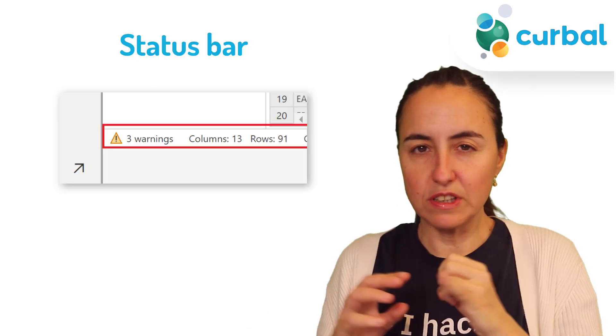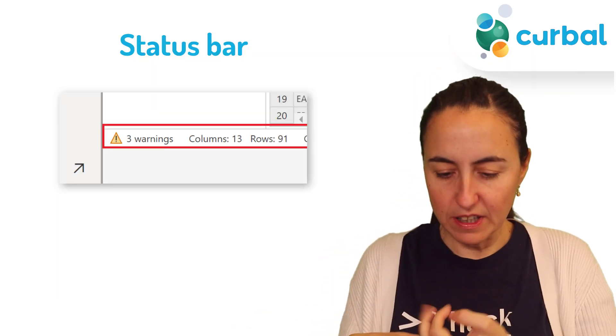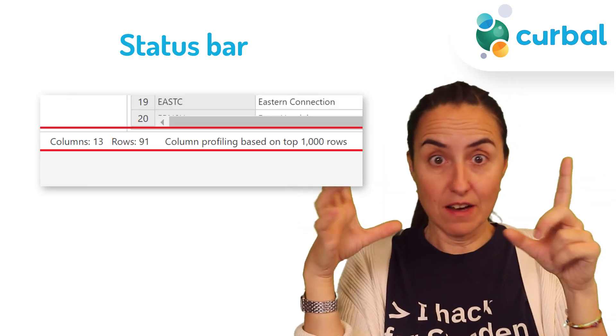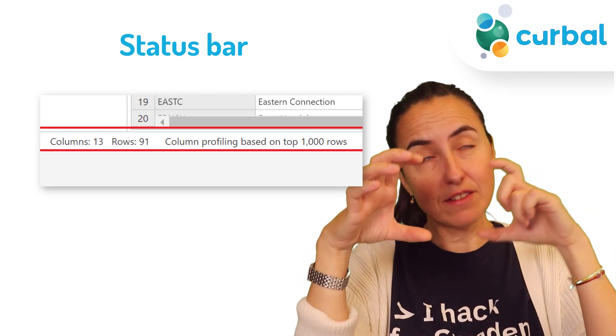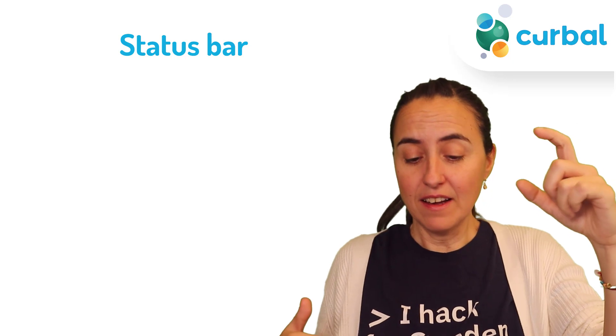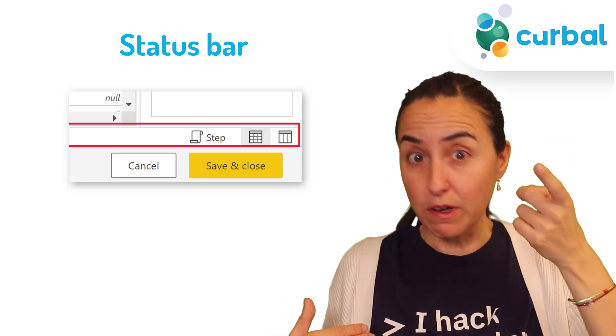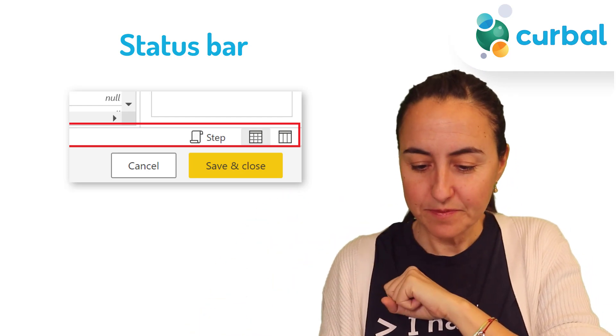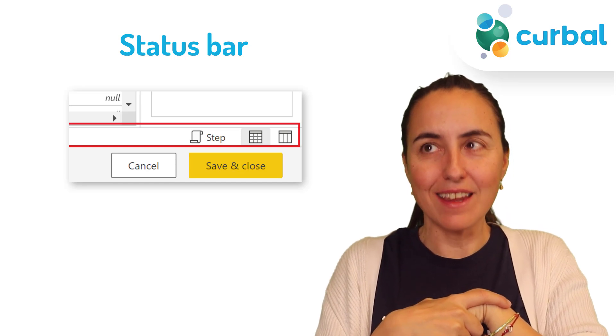They have added a new status bar that will show the number of errors, number of columns, and row count. If data profiling is enabled, you can switch between 1,000 data points or the entire dataset. You can also toggle between step and query scripts, and switch between normal data view and schema view. Some of these are available in Power Query Desktop, some are not — for example, query scripts are not in Power Query yet, but hopefully they'll arrive very soon.